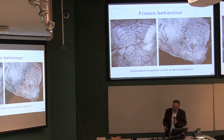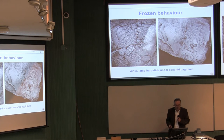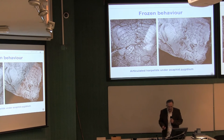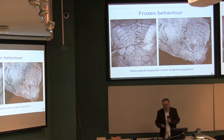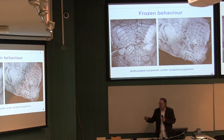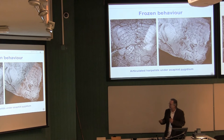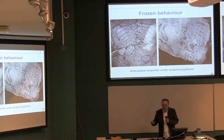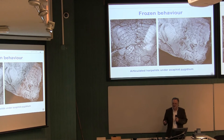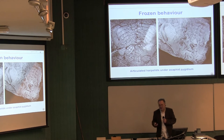At this stratigraphic level we also have from time to time exceptional preservation, like what we published two years ago — articulated harpetids and asaphids — meaning cryptic behavior. We can describe it as frozen behavior, preserved in some levels which are hard to follow because we get a lot of material from old collections and are not able to revisit the outcrops after more than 100 years.